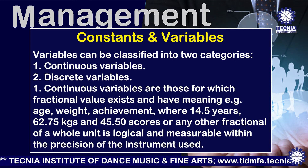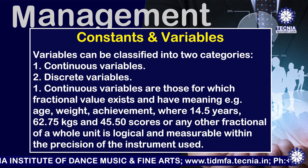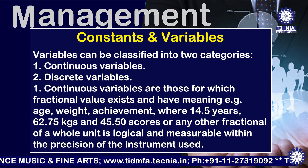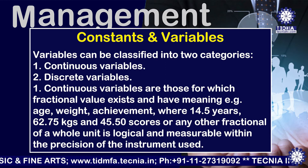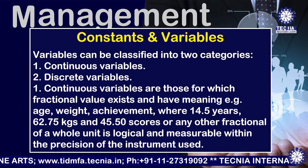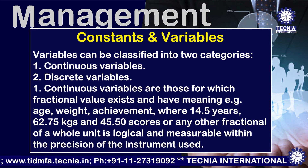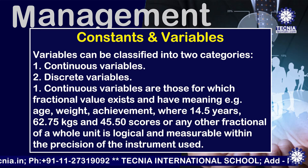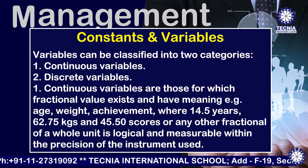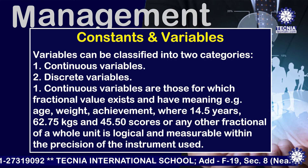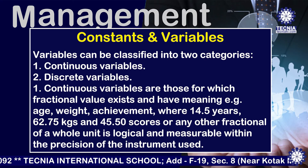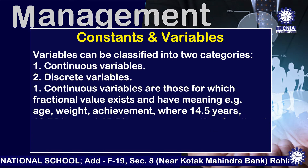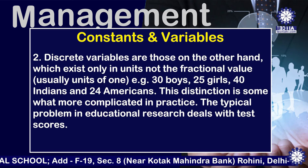Continuous variables are those for which fractional values exist and have meaning. Examples include age, weight, and achievement — where 14.5 years, 62.75 kilograms, and 45.50 scores, or any other fractional of a whole unit, is logical and measurable within the precision of the instrument used.